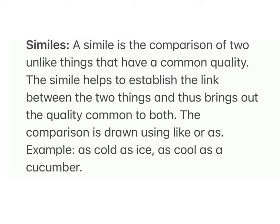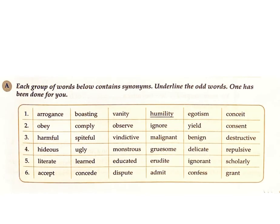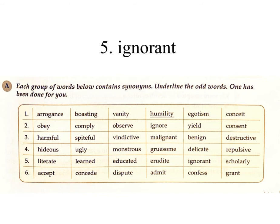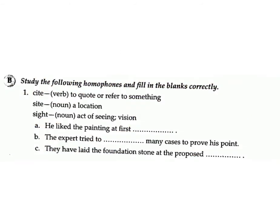Exercise A: Each group of words below contains synonyms. Underline the odd word. Answers: 1. humility, 2. ignore, 3. benign, 4. delicate, 5. ignorant, 6. dispute.